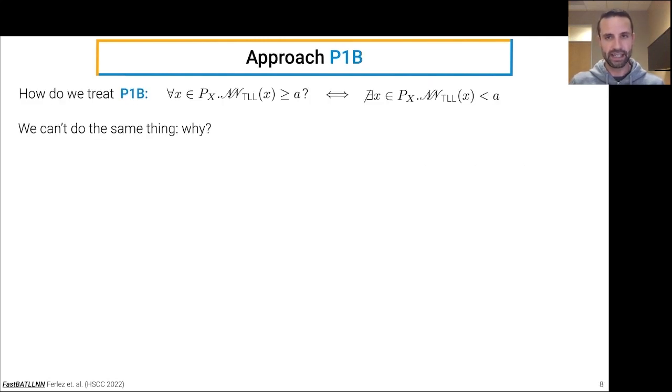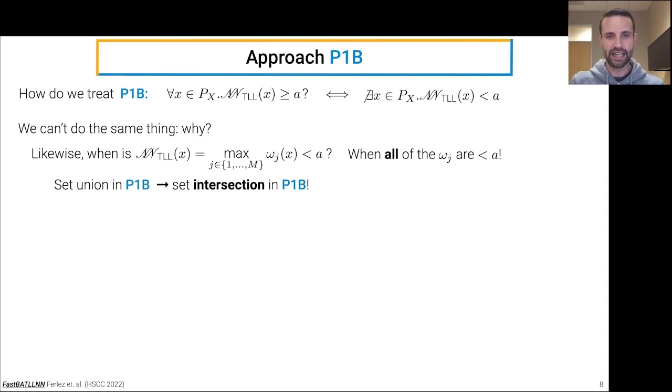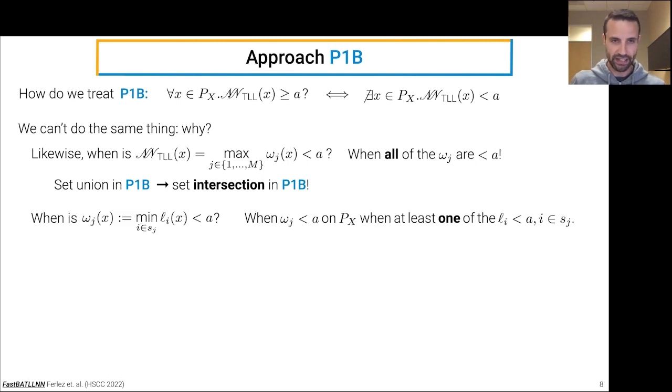How do we solve problem 1B? Well, we can certainly reformulate it in terms of looking for a violation, but we can't do quite the same thing. And why is that? Because when is the output of the TLL neural network less than A? When all of the min terms are less than A. So what was a set union in problem 1A becomes a set intersection in problem 1B. And when is a particular min term less than A? It's less than A precisely when at least one of its local linear functions is less than A. So what was a set intersection in problem 1A becomes a set union in problem 1B.